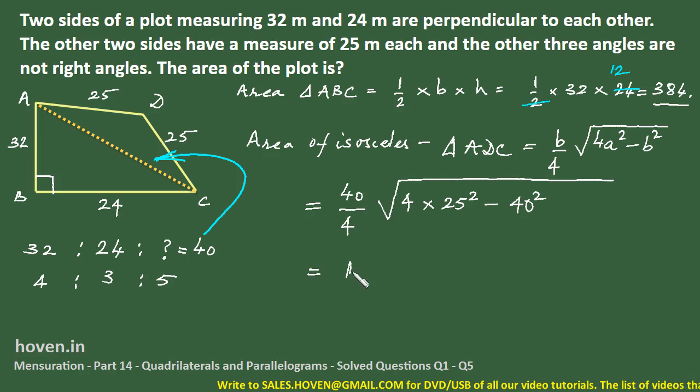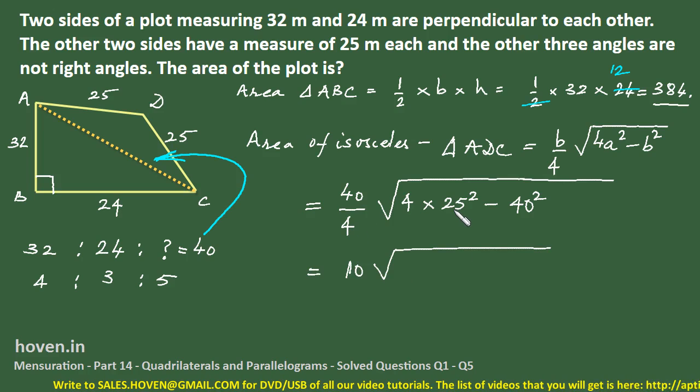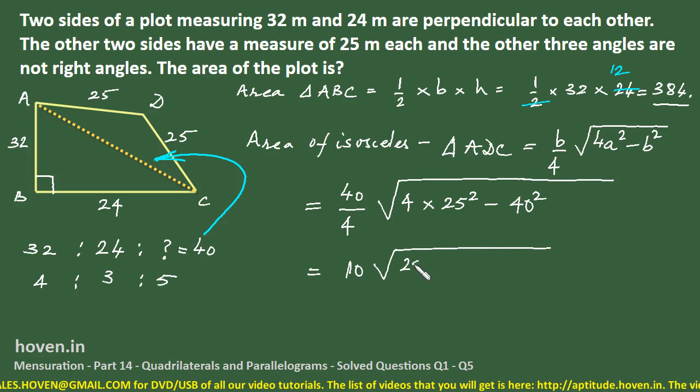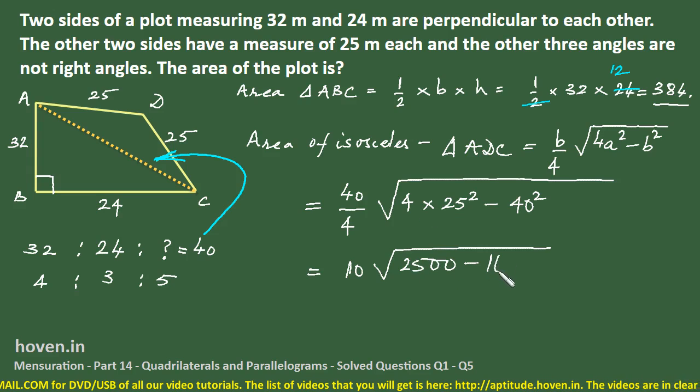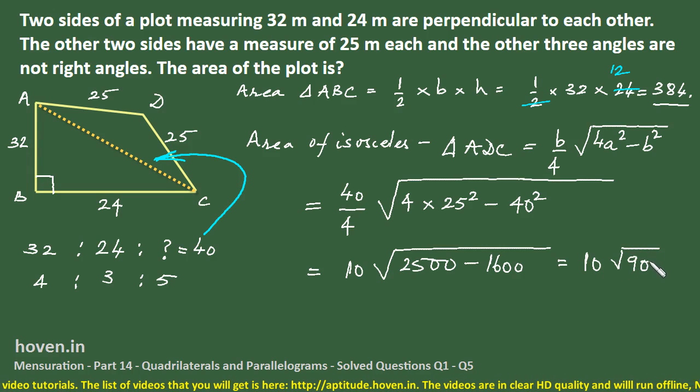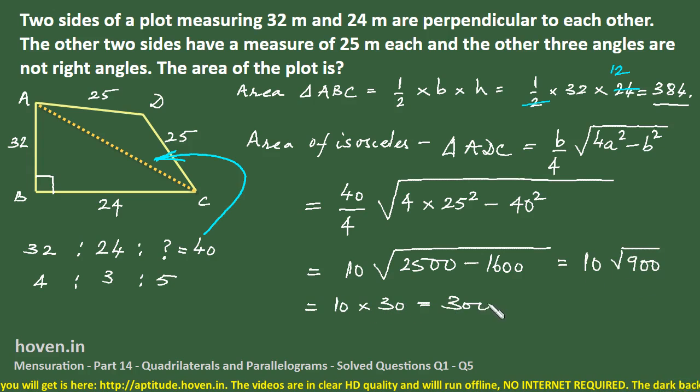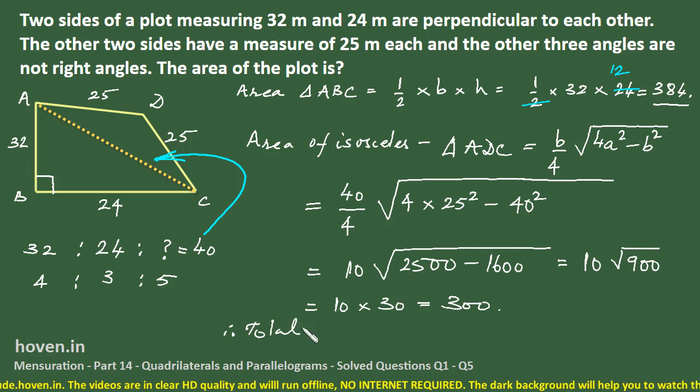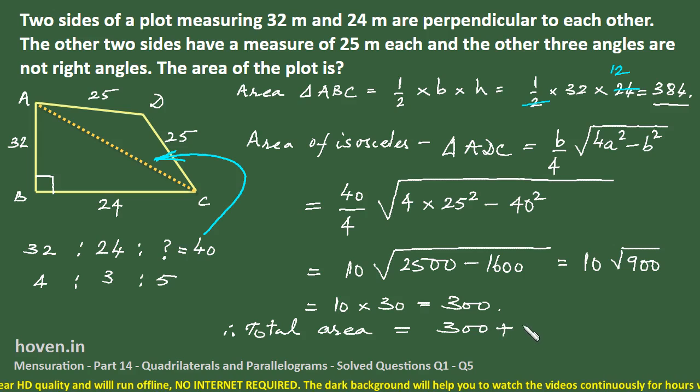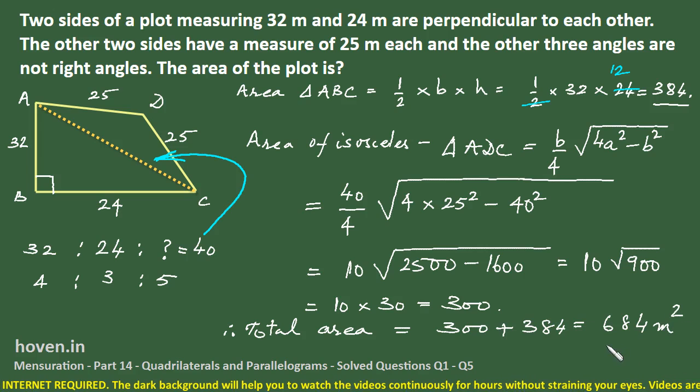Which is equal to, this cancels on table of 4, 10 square root of, this is 625. And 625 into 4 is 2500 minus sixteen hundred which is equal to ten square root of nine hundred which is equal to ten into thirty is equal to three hundred. And total area therefore, or the required area, is equal to this three hundred plus three eighty four which is equal to six eighty four square meter.